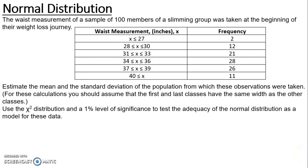In this example we are going to look at the goodness of fit of the normal distribution where we need to estimate parameters. The example is a waist measurement of a sample of 100 members of a slimming group taken at the beginning of their weight loss journey. We have group data of waist measurements in inches and their frequencies. The question asks us to estimate the mean and standard deviation, then use a chi-square distribution at the 1% level of significance to test the adequacy of the normal distribution as a model for these data.